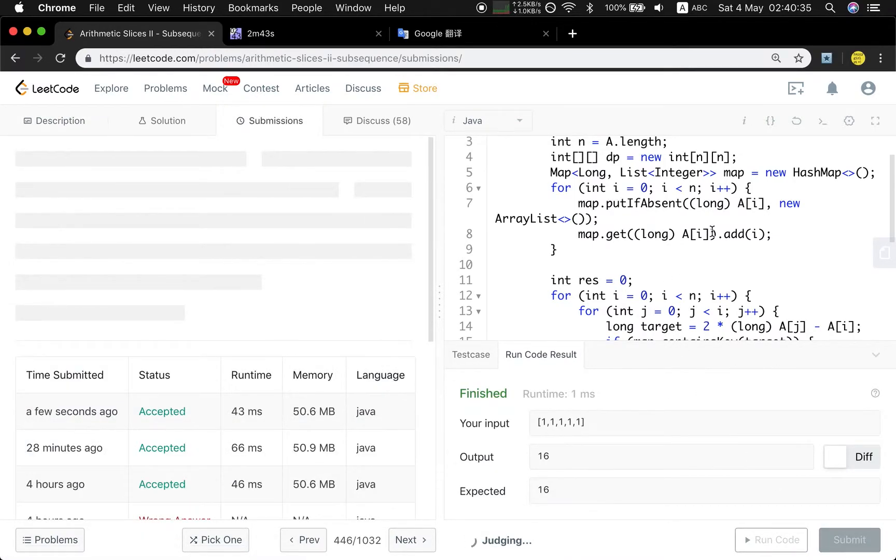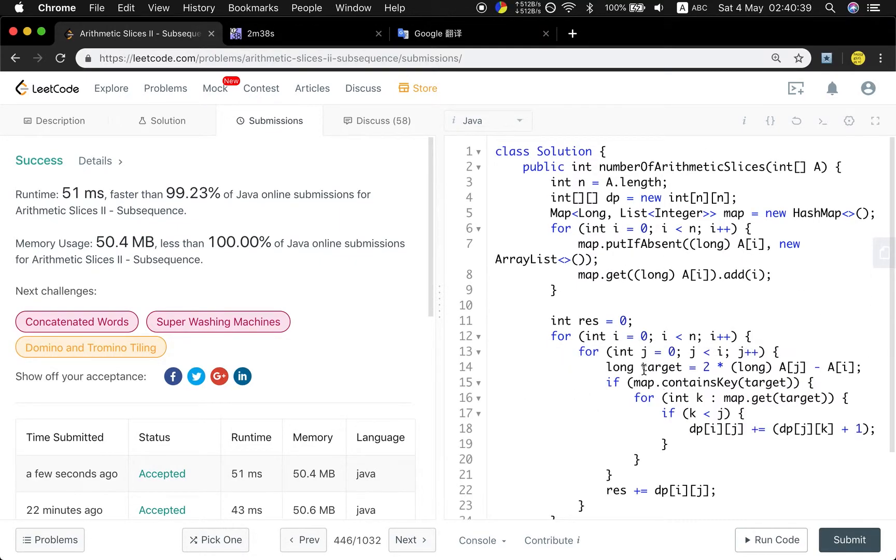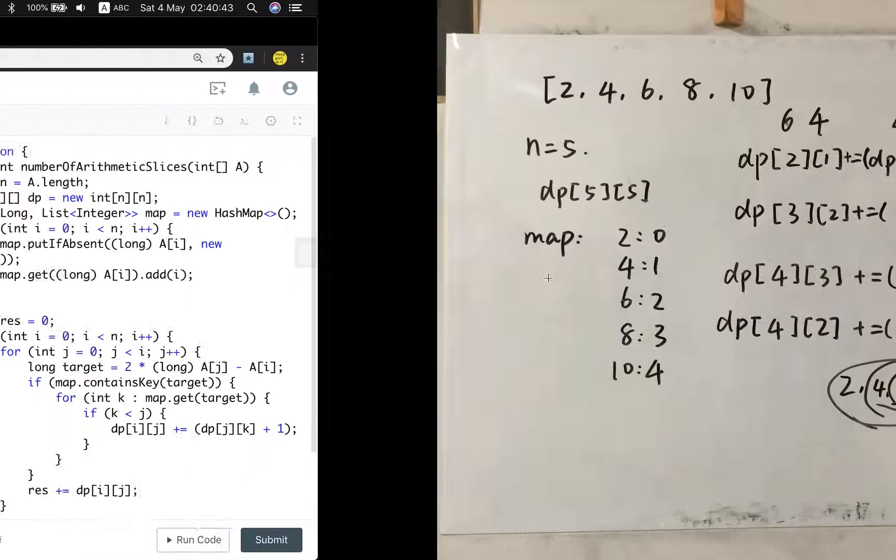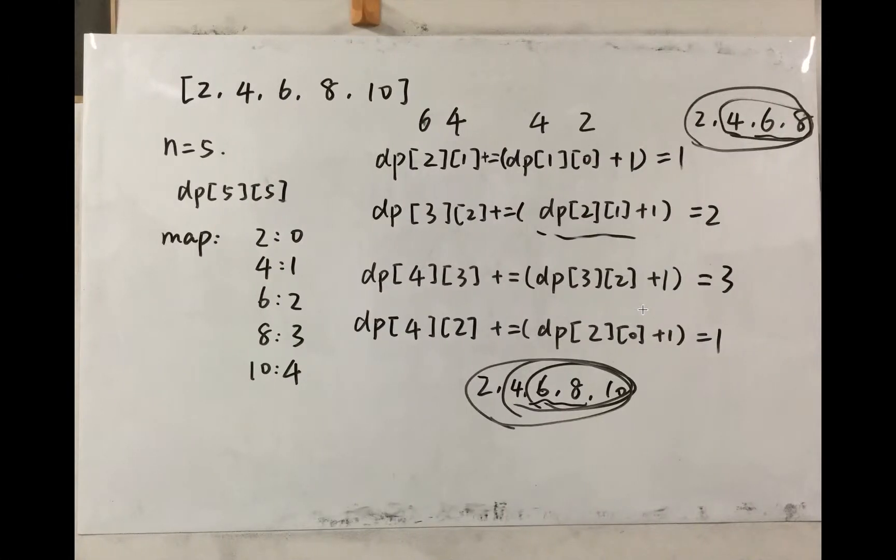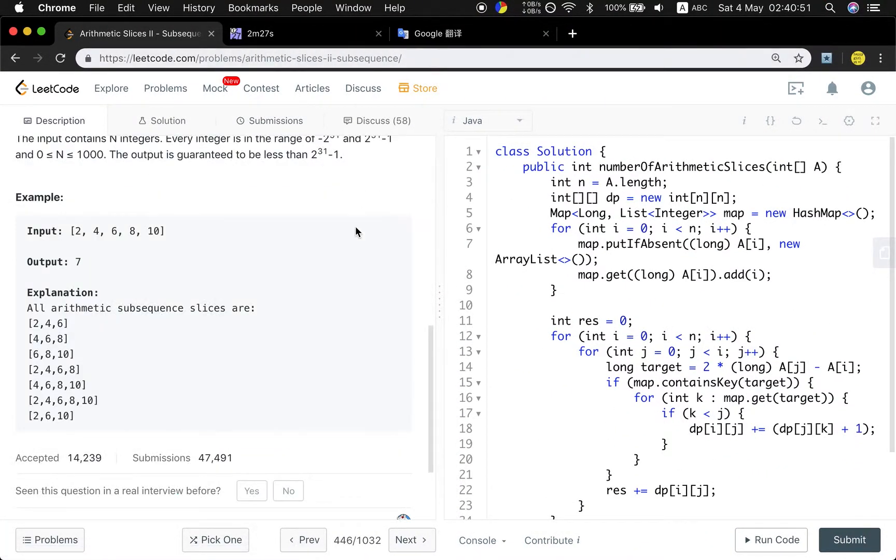Thank you for watching. I think if you cannot understand, you may draw the table to see what does this dp[i][j] mean and how it can cache the total numbers. See you next time.